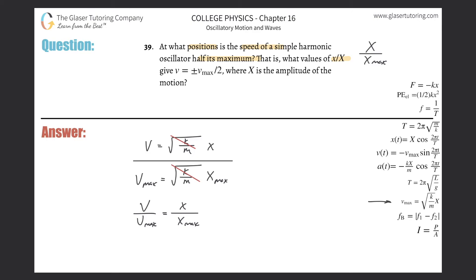They're saying, what positions is the speed of a simple harmonic oscillator half of its maximum? So that means if I knew the max, I can take half of that and then find the not-maximum velocity, right? Doesn't that kind of make sense?